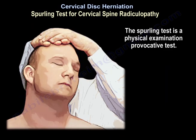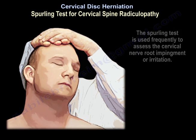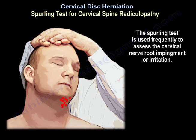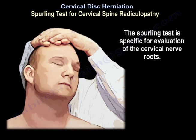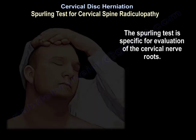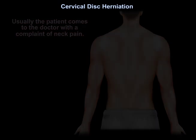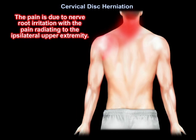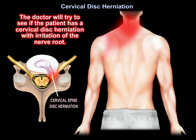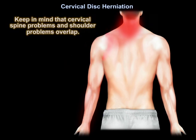The Spurling test is a physical examination provocative test, used frequently to assess cervical nerve root impingement or irritation. It is specific for evaluation of the cervical nerve roots. Usually the patient comes to the doctor with a complaint of neck pain, with the pain radiating to the ipsilateral upper extremity. The doctor will try to determine if the patient has a cervical disc herniation with nerve root irritation.